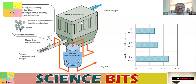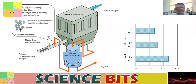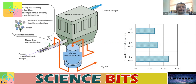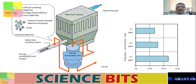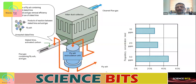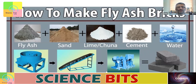The second method is using a dust collector. The flue gas goes inside the dust collector, and the materials inside make the fly ash condense. This condensed fly ash is collected, reducing the amount of fly ash mixed in the smoke that goes out into the atmosphere.